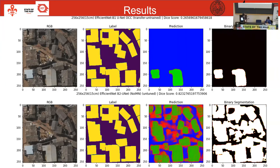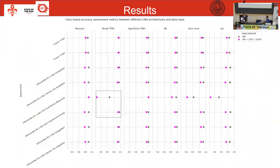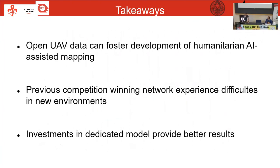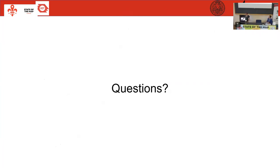This shows the full set of results. Overall they perform quite similarly, other than the anomaly of changes when transferring training from the competition-winning network. The three main takeaways are: open UAV data can really foster development of humanitarian AI-assisted mapping; previous competition-winning networks, although scoring well on intersection over union, may have difficulties in new environments; and investment in dedicated models could provide much better results. Thank you.